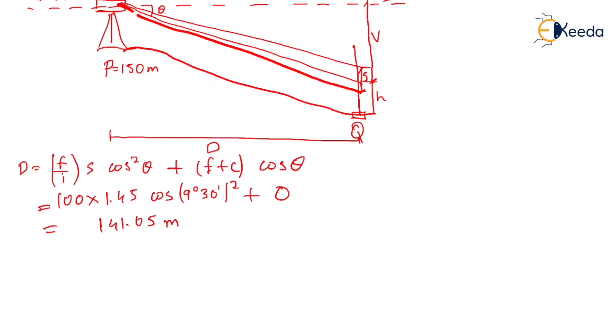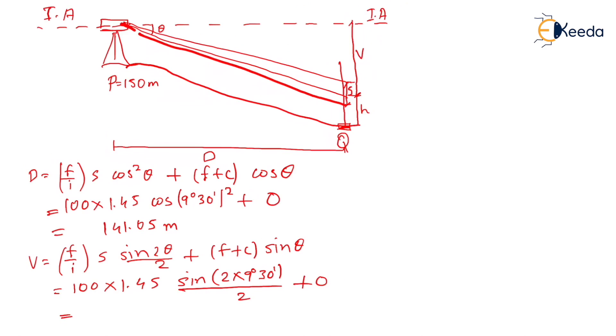To find out RL of point Q, we require vertical distance. So let us find out vertical distance. The formula is: V = (F/I)S sin(2θ)/2 + (F+T)sinθ. By calculating the values, we will get the answer equal to 23.60 meters.